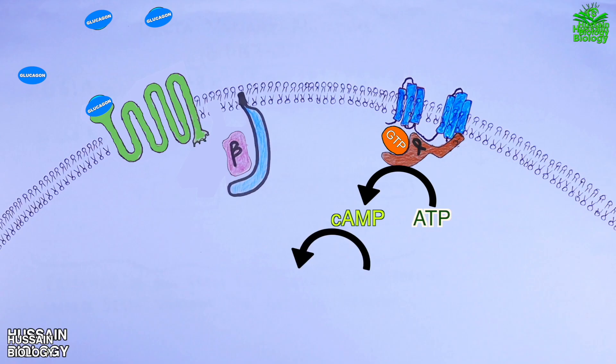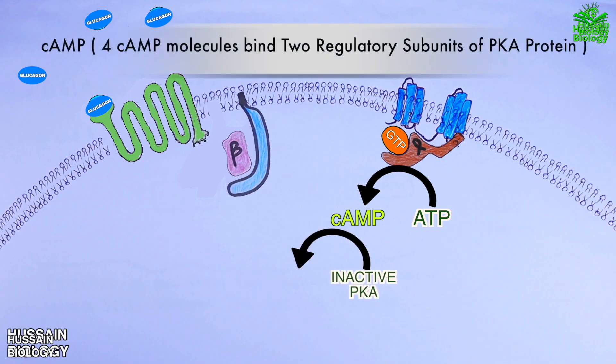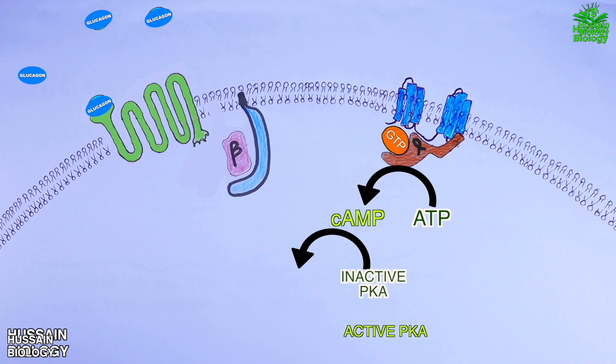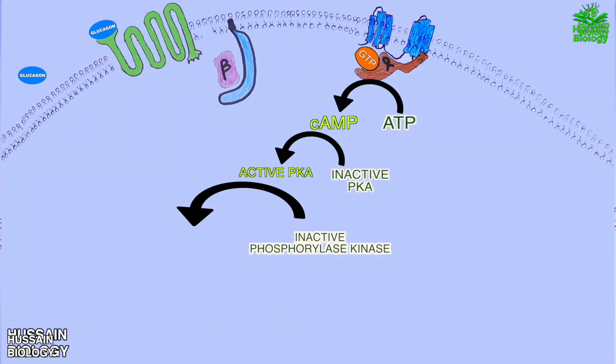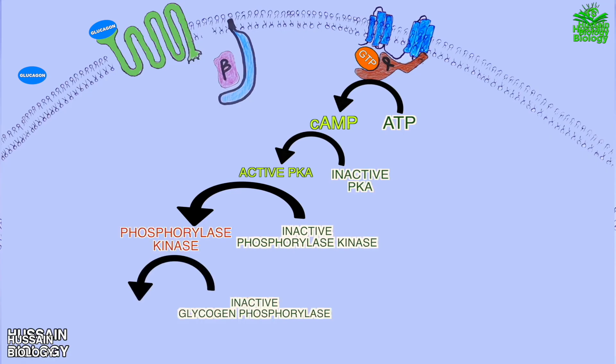This cAMP molecule then acts on inactive phosphorylase kinase enzyme and makes it active, which then in turn acts on inactive glycogen phosphorylase and makes it active.